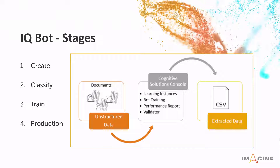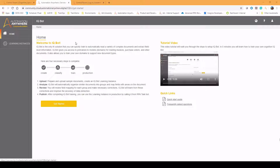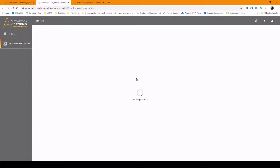The process we're going to move through is to create the learning instance, classify it, and let the cognitive solution go through a classification step. Then train the documents so the process learns where to find the information it's looking to extract. Finally, move that cognitive solution into production where it works with real scanned documents running through IQBot. Today I'm going to be using the community edition of IQBot, and we'll start by creating a new learning instance.